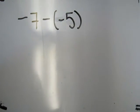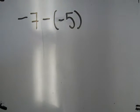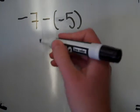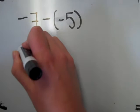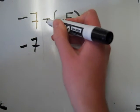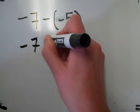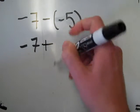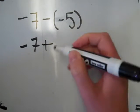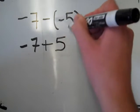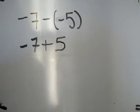Now when we see subtraction, we want to rewrite it as addition because we know how to do addition. So the first number stays the same, subtraction changes to addition, and the second number changes to its opposite. So the opposite of negative 5 is positive 5.